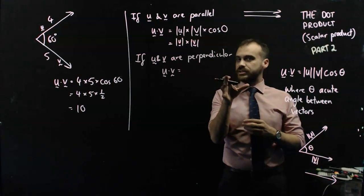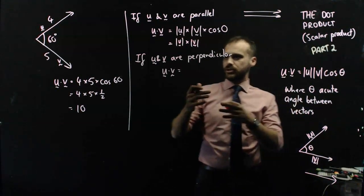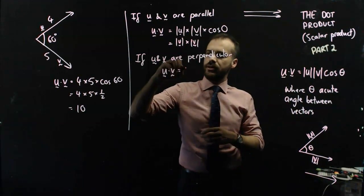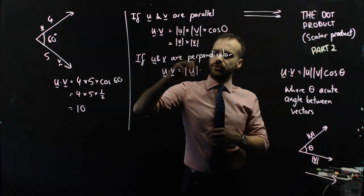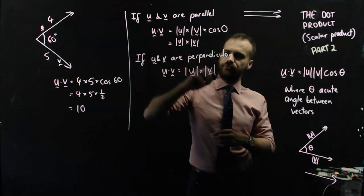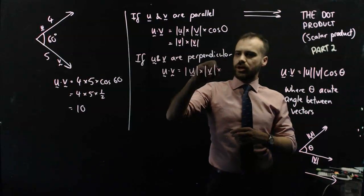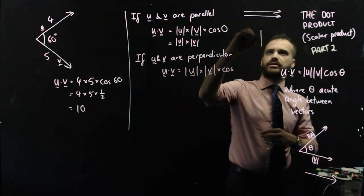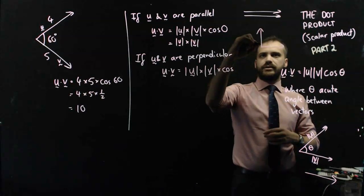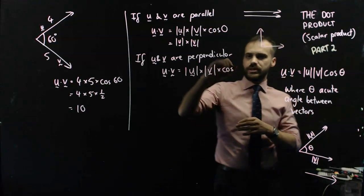Well, if two vectors are perpendicular, let's look at what happens. We get u dot v, we get the magnitude of u times the magnitude of v times cos, and perpendicular vectors look like that, there's 90 degrees between them.